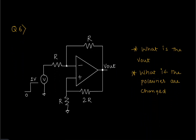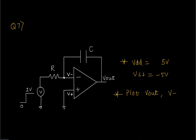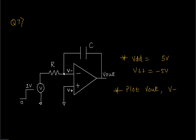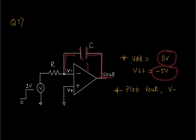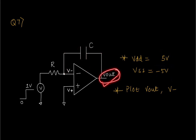They connected this structure with a step voltage input and told me what the output would be, so I told them one by one. Then they reversed the polarity — plus became minus and minus became plus — and asked what the output would be. They were happy with the previous questions, so they connected a capacitor in parallel, set Vcc to 5 volts and Vss to minus 5 volts, and told me to plot V-out.